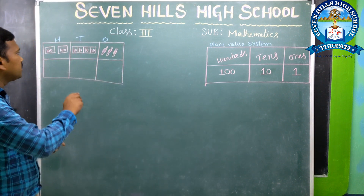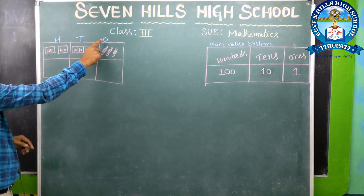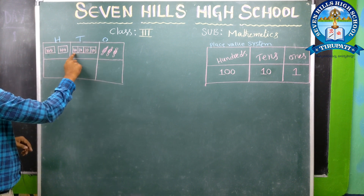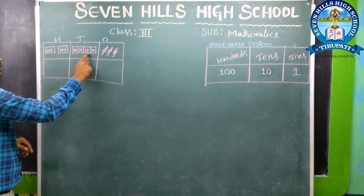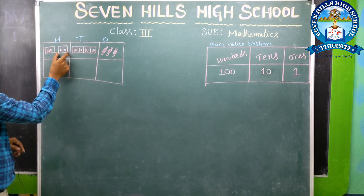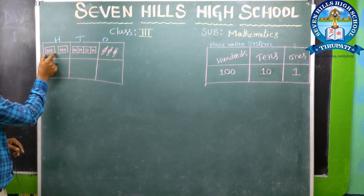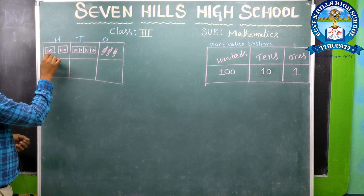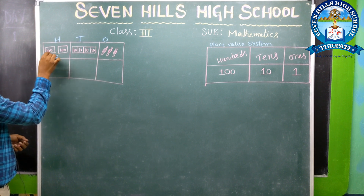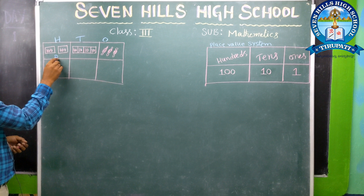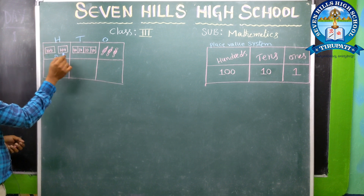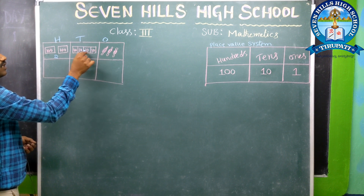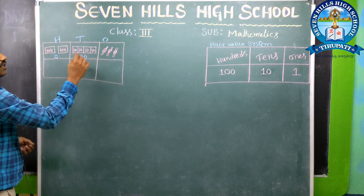Now we have chocolates. Here are 100s, 10s, and 1s. There are 3 chocolates in the 1s. Here are 10 chocolates, 10 chocolates, 10 chocolates, and 10 chocolates in the 10s. In this box there are 100 chocolates, and here also 100 chocolates. So tell me — totally, how many chocolates are there? 100 plus 100 is 200. And 10 plus 10 is 20, 20 plus 10 is 30, 30 plus 10 is 40 — totally 40 chocolates.